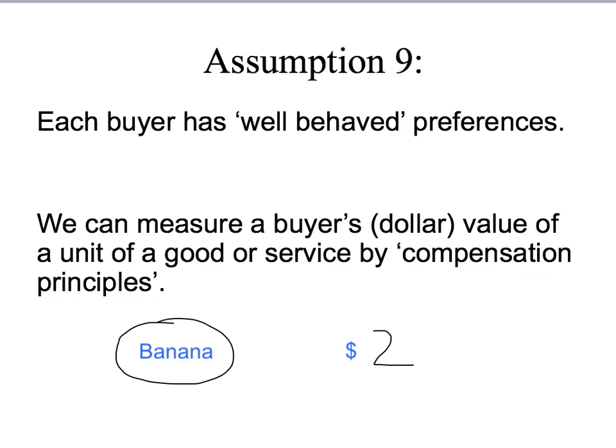In welfare economics, we're going to be bringing goods into dollar terms. The two dollars is going to be the welfare economics value of the banana. When we look at markets — bananas, pizzas, gym memberships going to different people — we need some way to add up the benefits of different goods to different people. We can't add apples and oranges; we need a common unit, and that unit is the dollar value of the relevant goods to individuals.